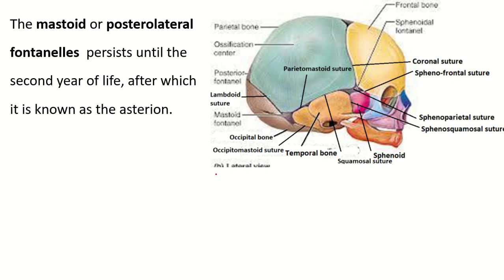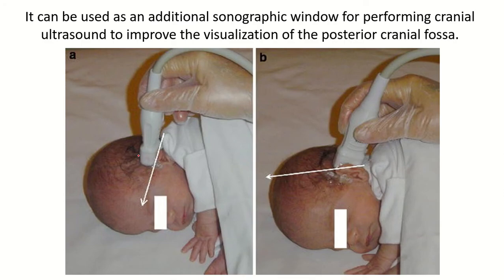The mastoid fontanelle persists until the second year of life, after which it is known as the asterion. In sonography, the probe is placed at the mastoid fontanelle, and through this area the posterior cranial fossa can be visualized.